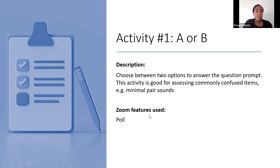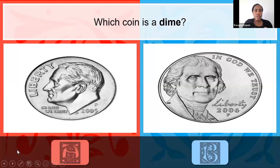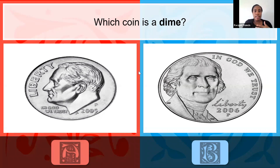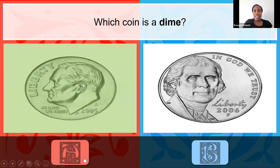The Zoom feature typically used is the poll. Since our poll is not open, I'm going to ask that you just vote A or B in the chat. So, first question: which coin is a dime — A or B? The most popular answer seems to be A. Let's check — it is A, and that is correct.